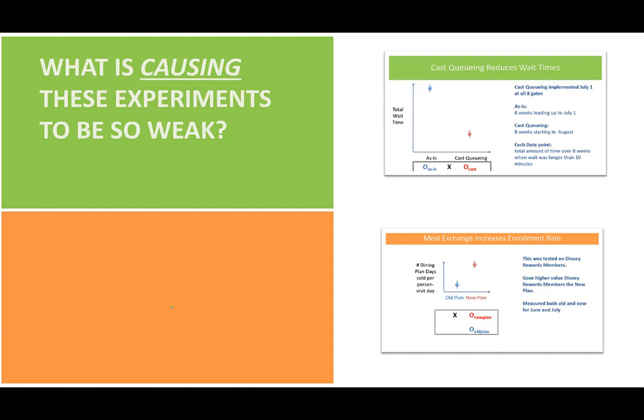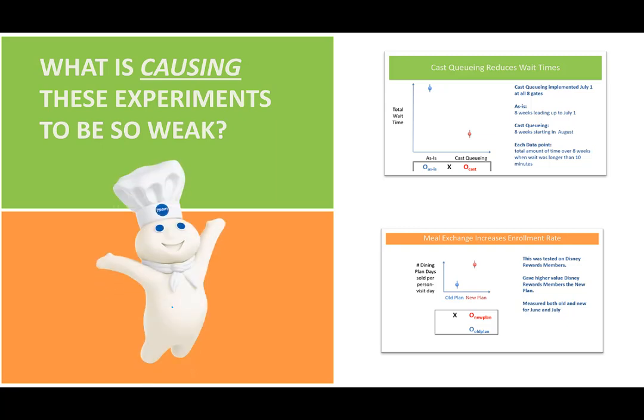So we just looked at two experiments — one about reducing wait times and one about increasing enrollment rates in the dining plan — and each of them are pretty weak experiments. You're able to identify alternative hypotheses that could have been causing these changes pretty quickly. So what's causing these experiments to be so weak? We've got a special guest coming to our next video to help us figure that out — none other than the Pillsbury Doughboy. We'll see you next time.